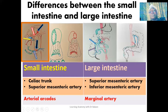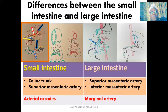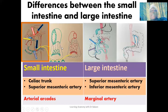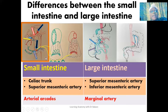For the jejunum and ileum — the second and third regions of the small intestine — we have jejunal and ileal branches from the superior mesenteric artery. So the entire small intestine is supplied by branches from the celiac trunk and the superior mesenteric artery.